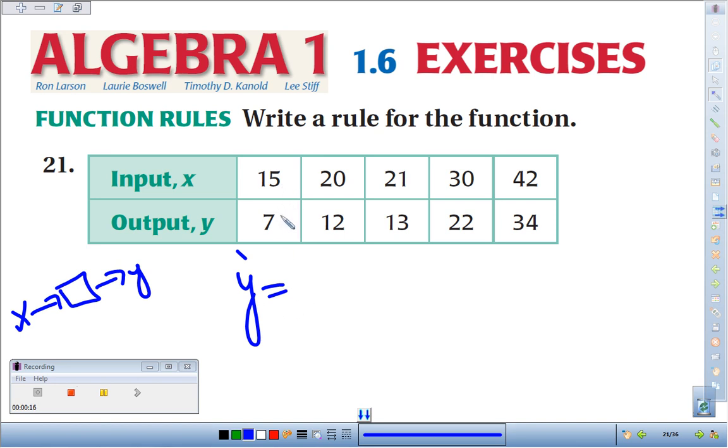To go from 15 to 7, there's no easy division there, but I notice I do subtract 8. Same thing from 20 to 12, I subtract 8. 21 minus 8 is 13, 30 minus 8 is 22, and 42 minus 8 is 34. I think we've got a rule.